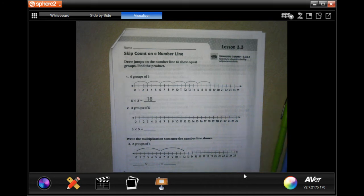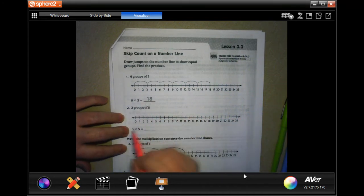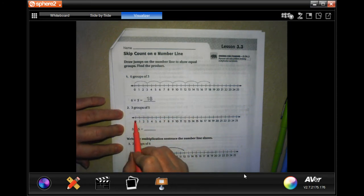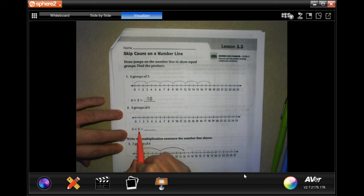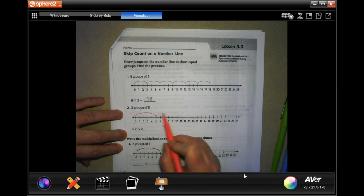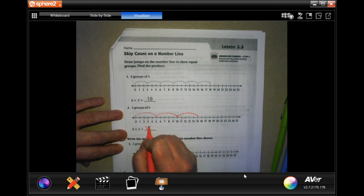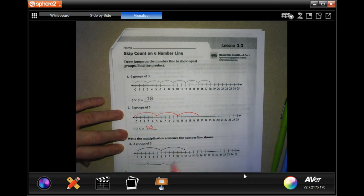What we're going to do is follow the prompts that it gives us and we're going to do the jumps and then write in what it is. So we're going to go three groups of five, so five, ten, and then fifteen. That's three jumps, five each. We landed on fifteen.